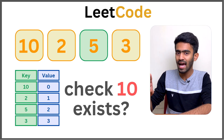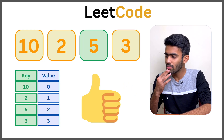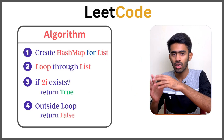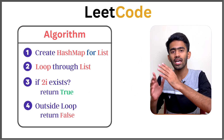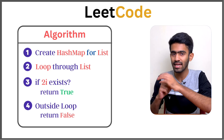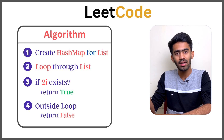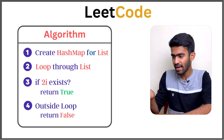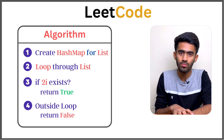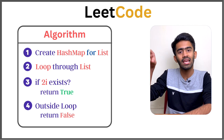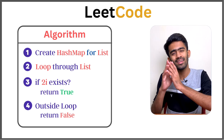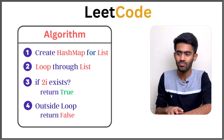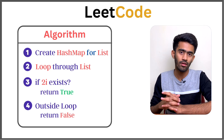Now we will see the algorithm. First, we will create a hash map and store the list. We store the value as the key and the index as the value. Then we traverse the list. If two times the number exists in the hash map, return true. We check all numbers — if no number's double is found, outside the loop we return false. This is the basic outline of the algorithm.